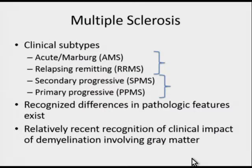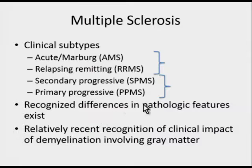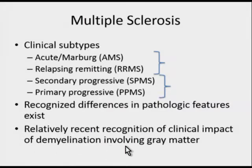Now I'd like to quickly discuss the importance of gray matter injury in multiple sclerosis. The clinical subtypes have been identified as acute or Marburg type, relapsing-remitting, secondary-progressive, and primary-progressive MS. These have different clinical presentations, and recently recognized differences in pathologic features have been found. Most importantly, demyelination appears to involve the gray matter to a greater extent than was previously appreciated.